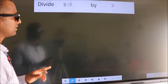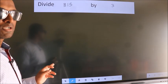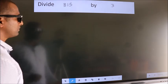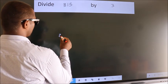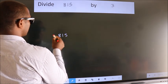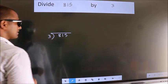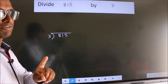Divide 815 by 3. To do this division, we should frame it in this way. 815 here, 3 here. This is your step 1.